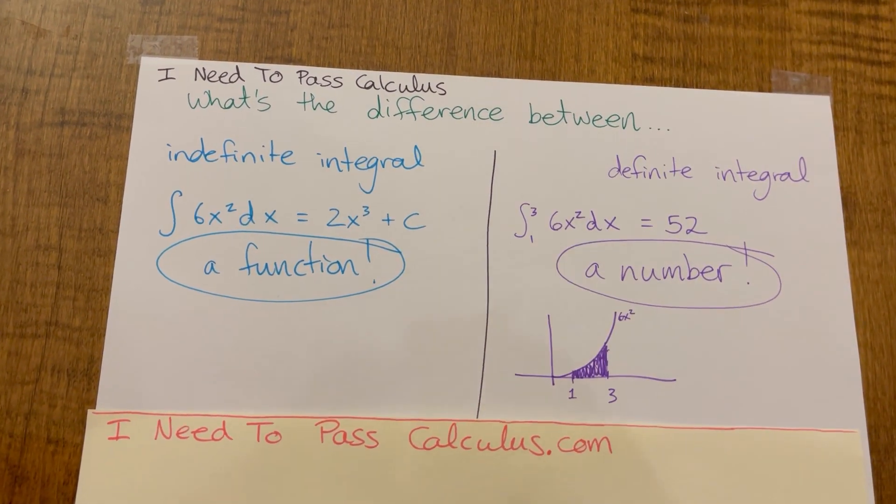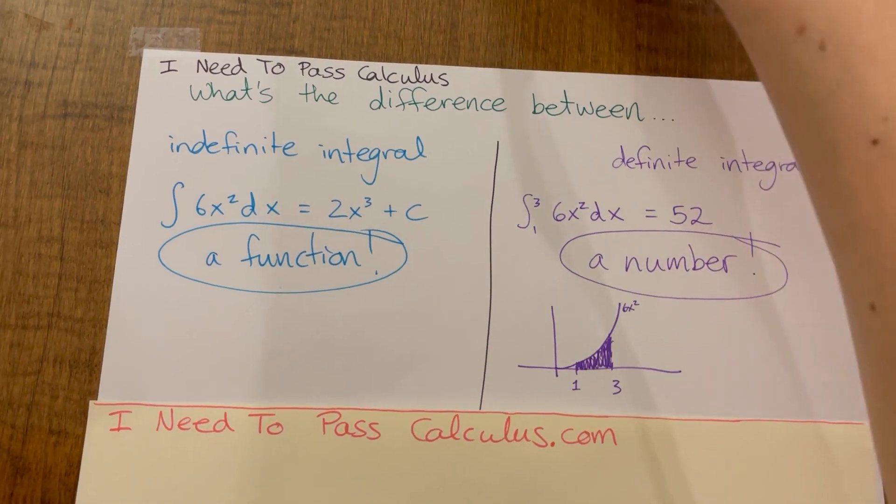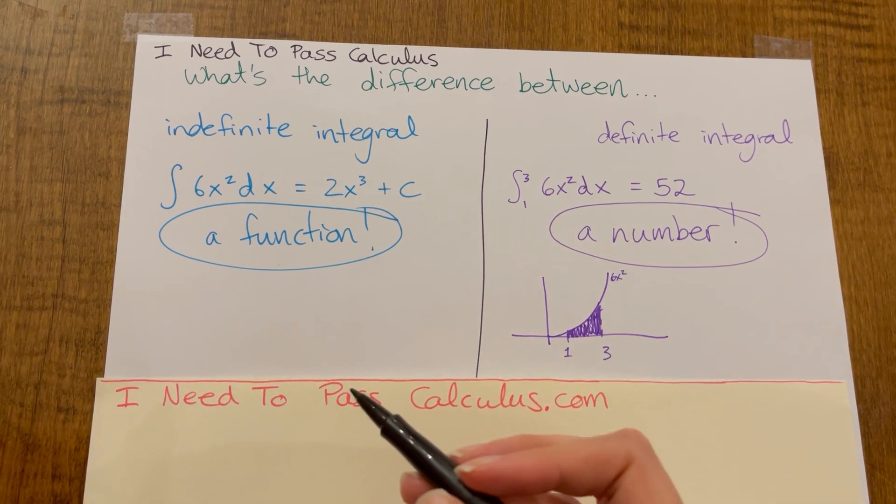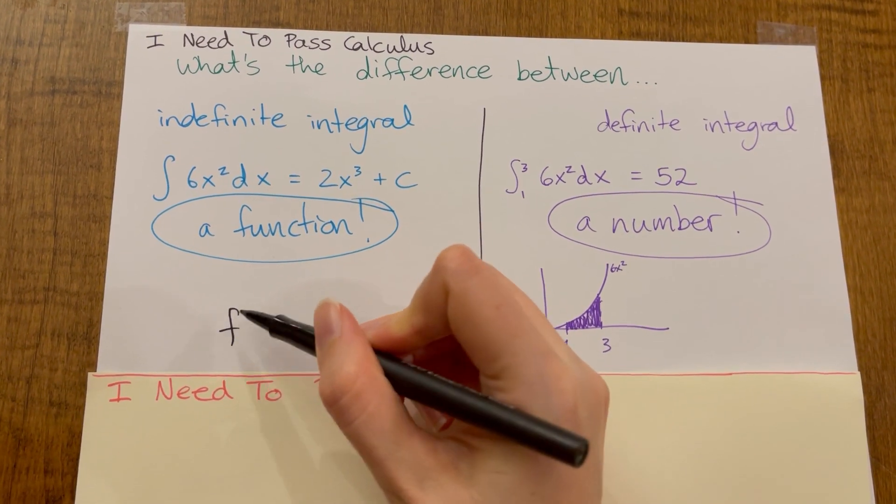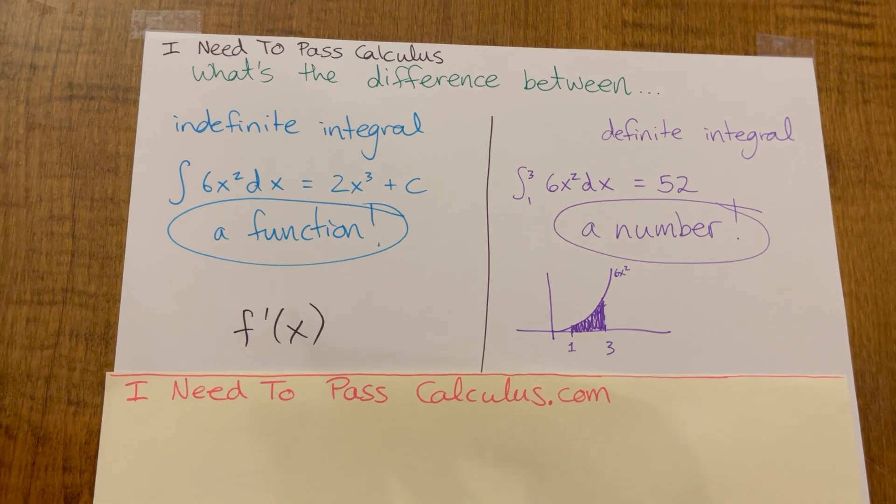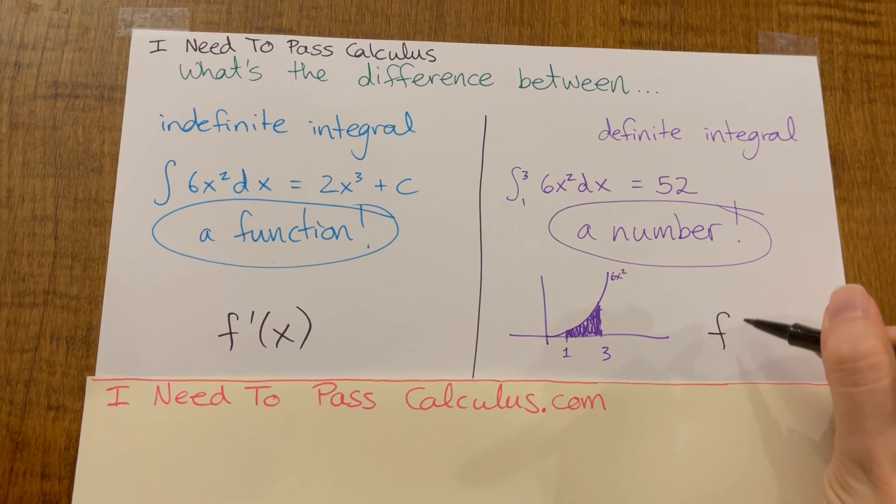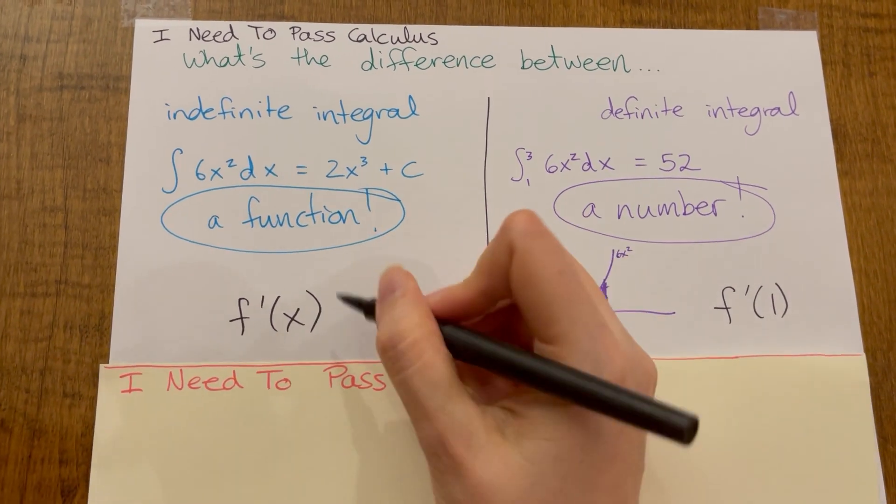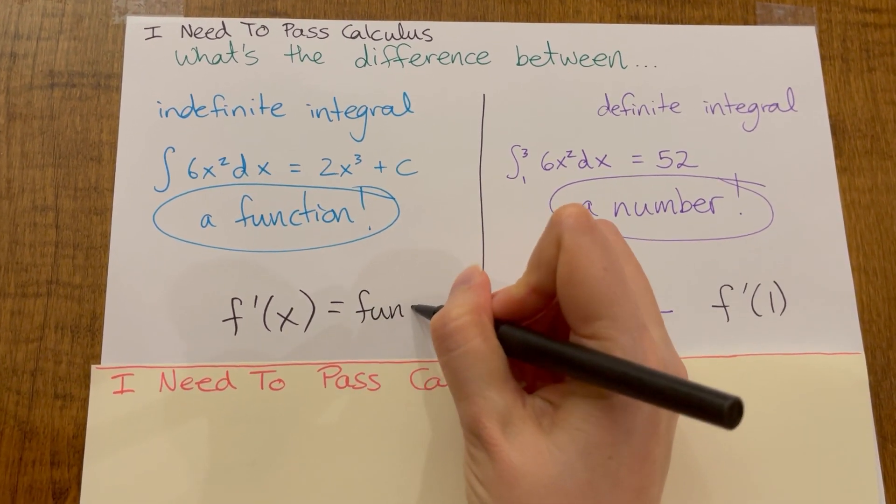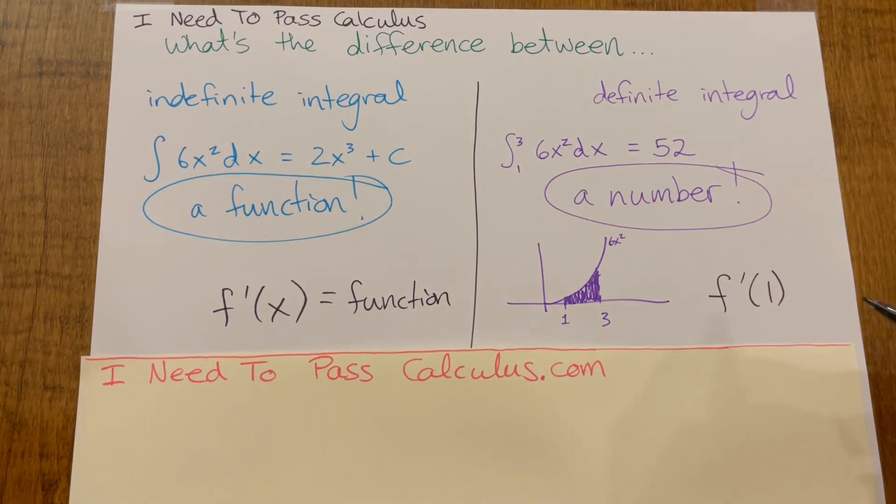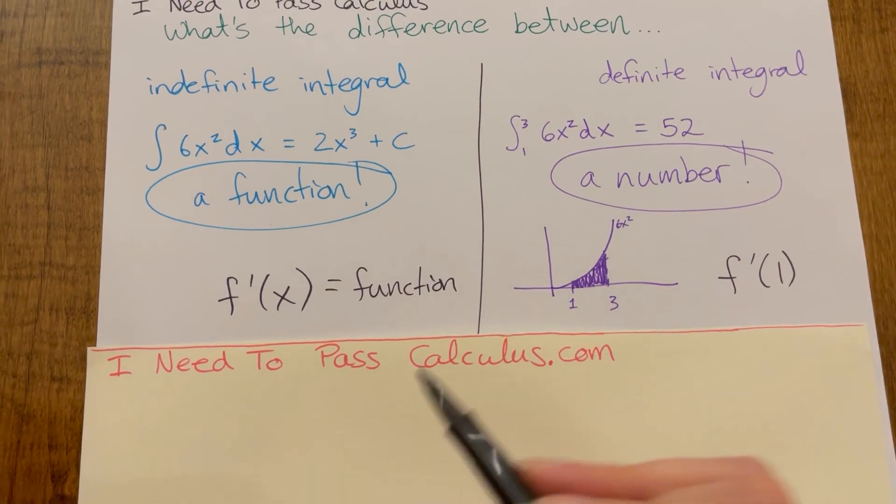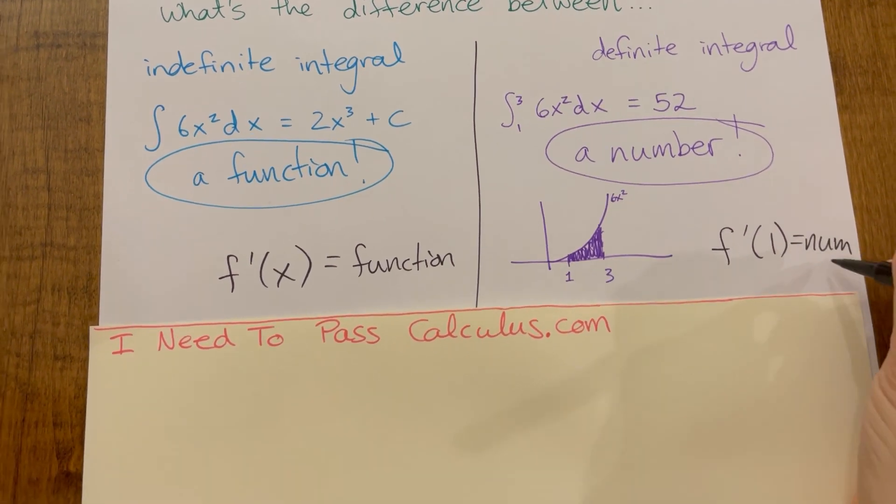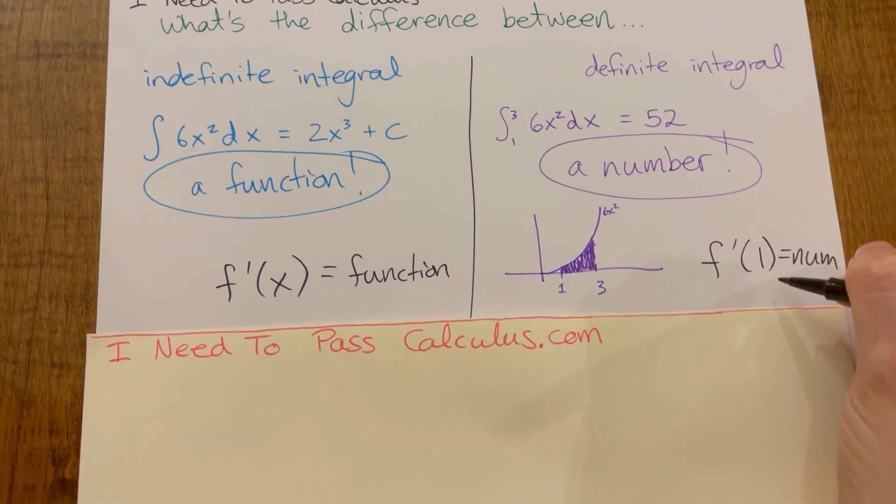If you've already done derivatives, which you probably have if you're studying anti-derivatives, it's a little bit analogous to what's the difference between f prime of x versus say f prime of one. So f prime of x will be the function that you find when you take a derivative, and f prime of one on the other hand is after you find the function, plugging in, and you'll get a number.